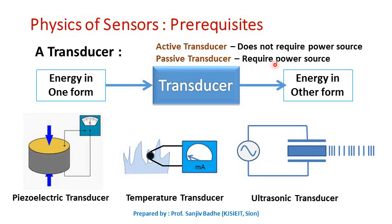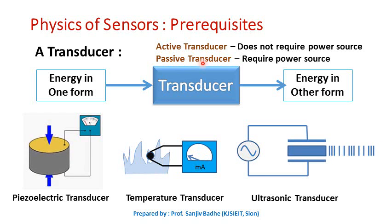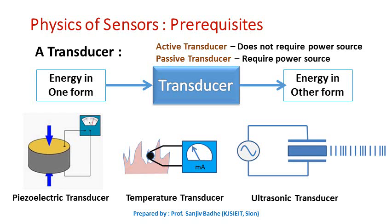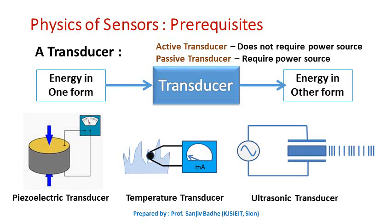Passive transducers need a power source for their operation. They generally produce the output in the form of capacitance or resistance, which can then be converted into an equivalent amount of voltage or current signal. The ultrasonic transducer, which converts electrical signal into an equivalent sound signal, is an example of a passive transducer. Resistive sensors are the best examples of passive transducers.